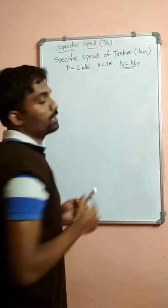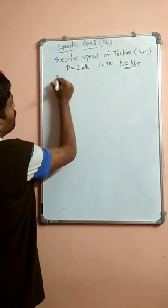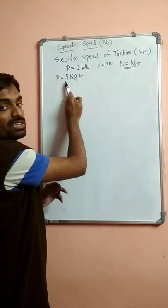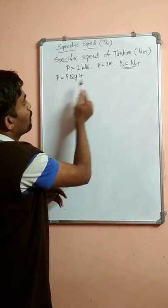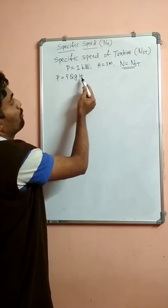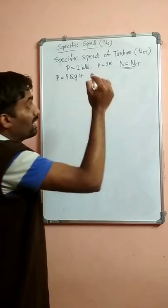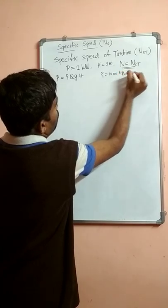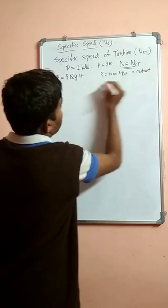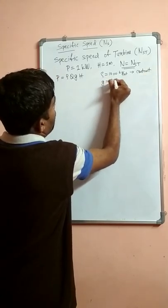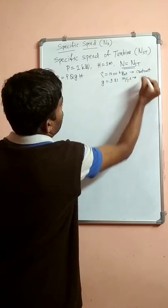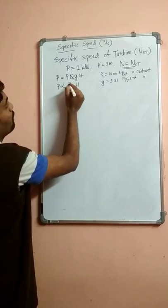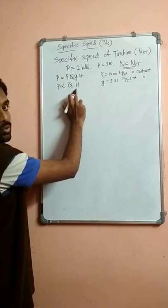Now let us try to obtain the expression for N-S-T. For this, we consider the basic equation P is equal to Rho Q G H, where P is power, Rho is density of the working fluid which is water with value 1000 kg per meter cube, Q is the discharge, G is 9.81 meter per second square, and H is the head available. Since Rho and G are constant values, we can modify the equation: P is proportional to Q into H.